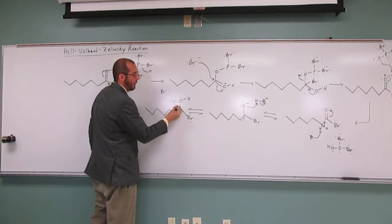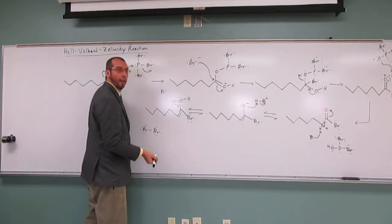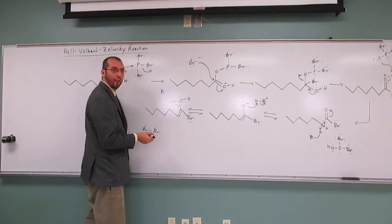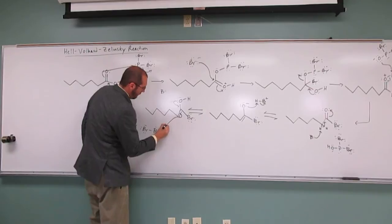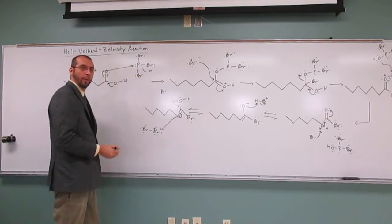So what's going to happen is these electrons are going to come down and kind of promote that nucleophilicity of that carbon. So when that happens, these electrons are going to attack the bromine there.